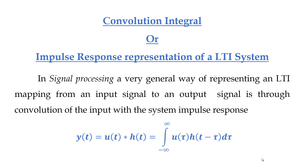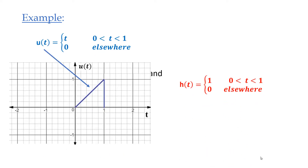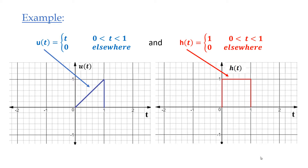This expression shows that if we have the impulse response of a linear time invariant system, then we can find the output for any input signal by convolving the input signal with the impulse response. Let's take an example: u is the input signal and h is the impulse response of a linear time invariant system. We are interested in finding the output of this LTI system using the convolution integral.